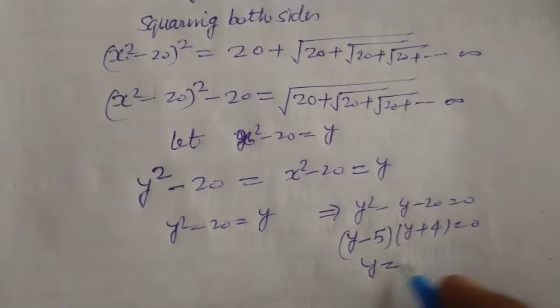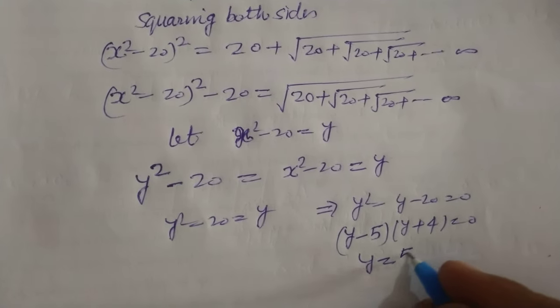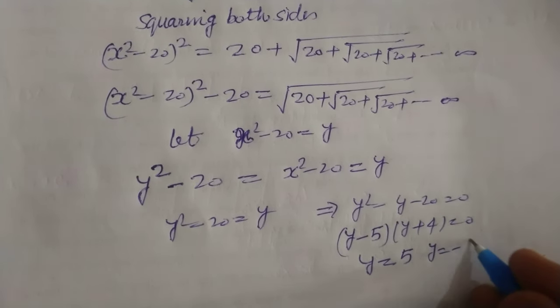When we put them one by one equal to 0, we got Y equal to 5 and Y equal to minus 4.